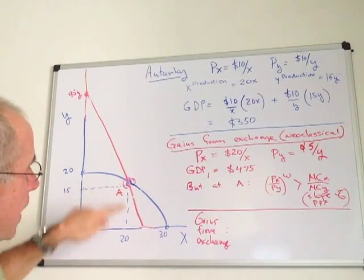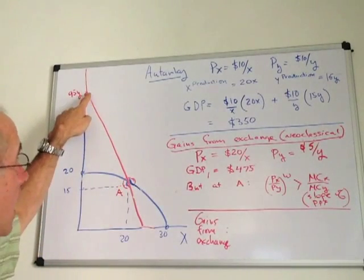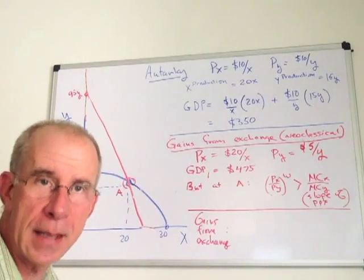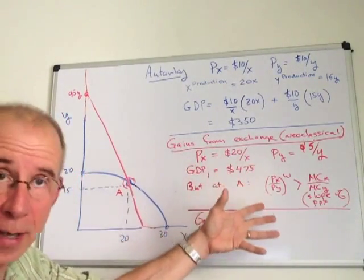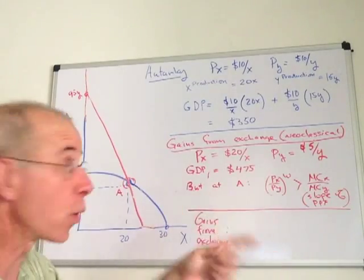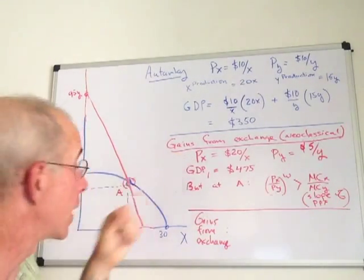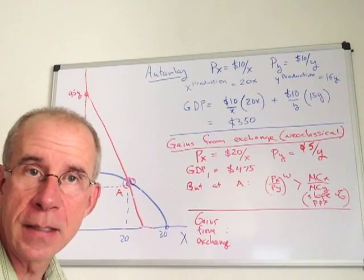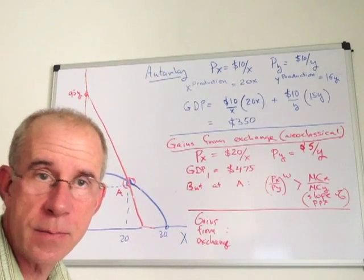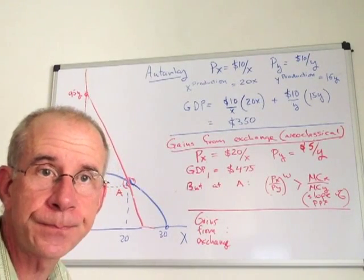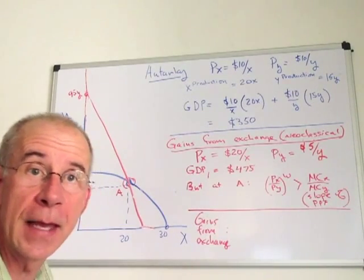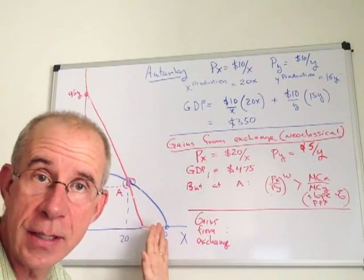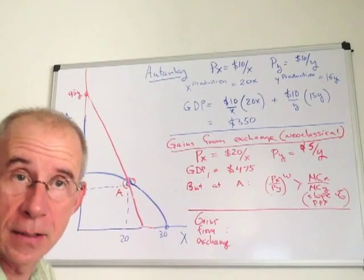This is depicted by a line going through the PPF at this point. The slope of that line is the relative prices on the international market for Y per X, given these individual nominal prices. This red line was the consumption possibilities of the country if it traded on international markets but kept production fixed. Another way of thinking about that is that this is a depiction of the value of national income at this production level and international prices.